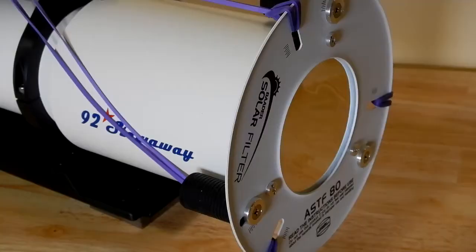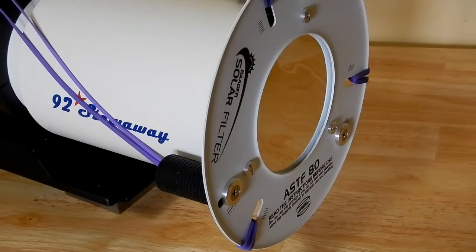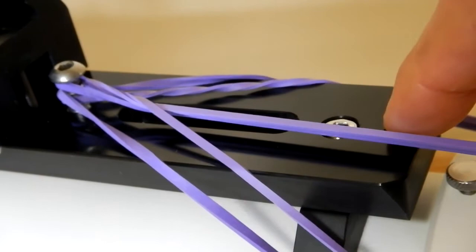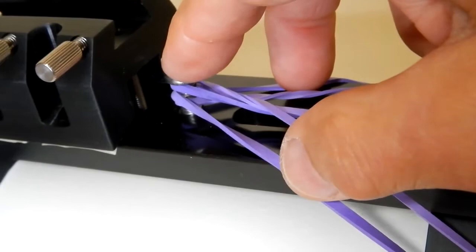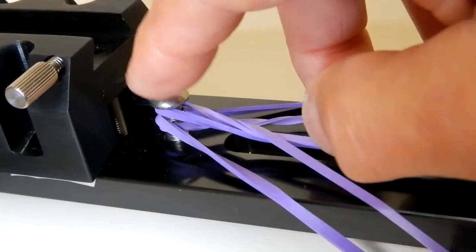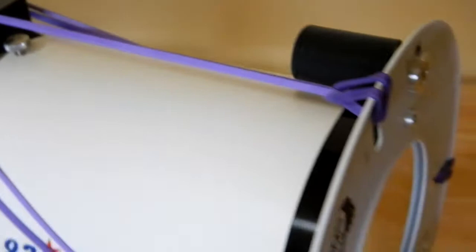And what I've done is on the dovetail bar that I have on top of the 92 millimeter that you see here - this is the Astro-Physics dovetail bar, I think it's their eight inch - anyway, I already have a quarter-20 hole that's drilled and tapped, so I just used that hole, took a button head quarter-20, screwed it in there, and now that's the anchor point for the three rubber bands. And that holds it on there very nicely.